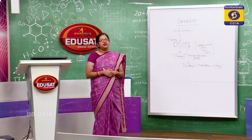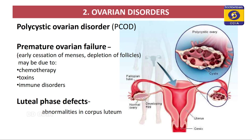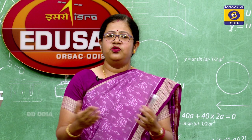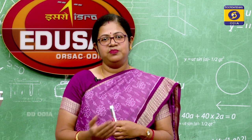Coming to ovarian disorders, we have a diseased condition called PCOD — polycystic ovary disorder — where there are multiple cysts over the ovary, and this leads to infertility. It may also account for premature ovarian failure, which means cessation of the menstrual cycle before 40 years of age — normally the menstrual cycle continues up to 45 to 50 years. Similarly, if there is depletion of follicles with no healthy follicles remaining, it is also considered premature ovarian failure.